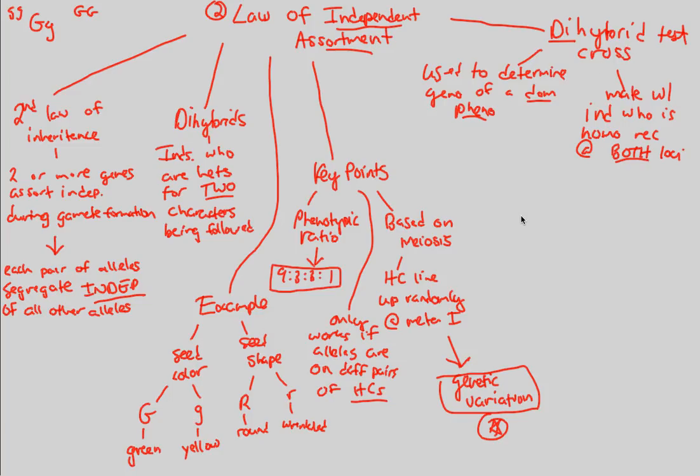There are two possible dihybrid test crosses that can happen. Let's imagine we have an individual that's a green and round color and seed shape. That individual can either be this or that individual can be this. Both of these denote somebody, a plant, that has green seed color and round seed shape. Both show the same phenotype. How do we figure out which is which?